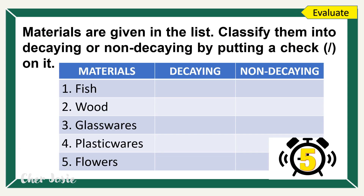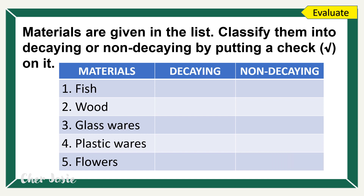To understand our lesson better, please get your notebook or paper to answer the following. The materials are given in the list — classify them into decaying or non-decaying by putting a check on it. Let's check your answers. For number one, fish — the correct answer is decaying. For number two, wood — the correct answer is decaying. Number three, glassware — it's non-decaying. Number four, plasticware — non-decaying. And number five, flowers — it's decaying.